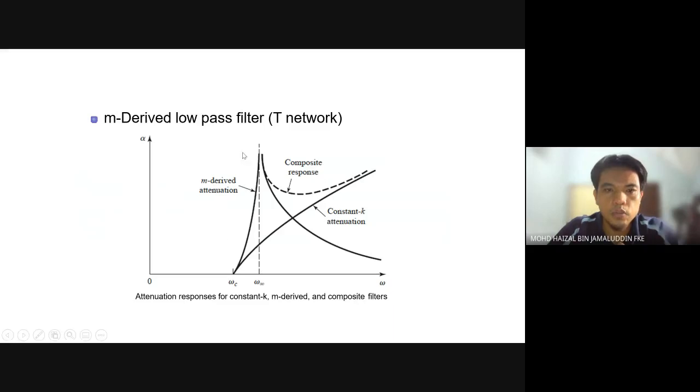We go back to the graph. M-derived attenuation has a sharp cutoff frequency, but after the cutoff frequency it will reduce significantly. While constant K does not have a sharp cutoff here. So in order to maintain the attenuation after the cutoff frequency, the composite is introduced to maintain the attenuation level.